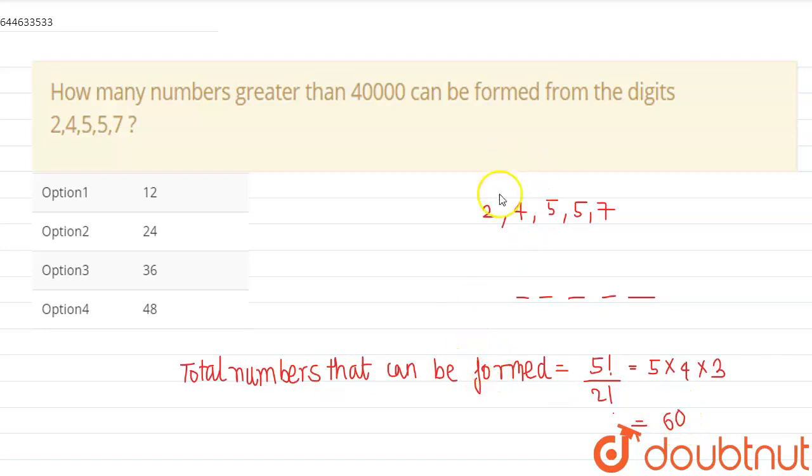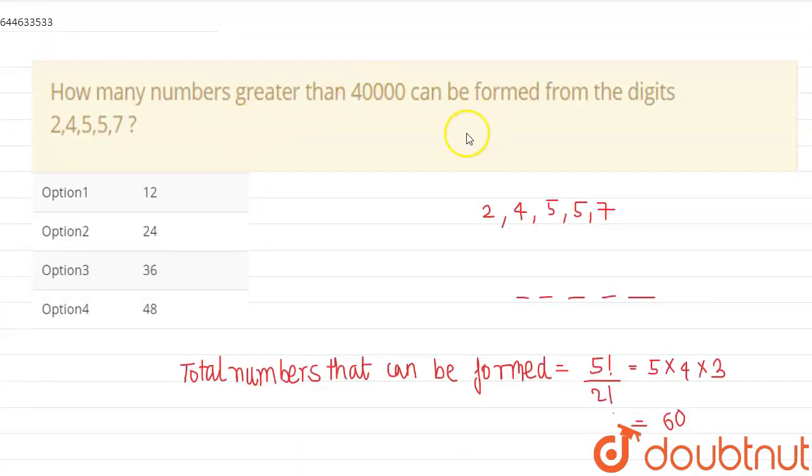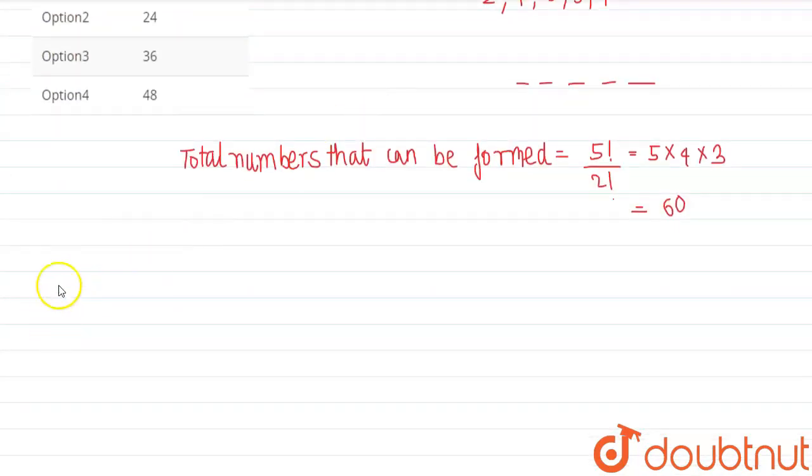So these are the total numbers that can be formed from these digits. Now we need to find the numbers greater than 40,000. So firstly we can find the numbers that are less than 40,000.